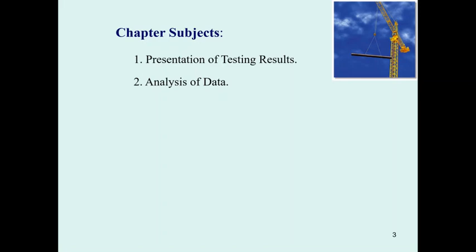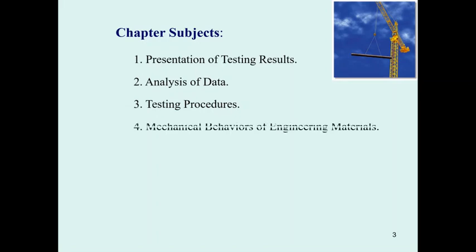The second chapter covers statistics: when you get data from the test, you will have many data points, so you need to find the mean and the standard deviation. The third chapter covers testing procedures — tension test, compression test, fracture test, and shear test — so you understand each procedure and can obtain the mechanical properties of the engineering materials. This chapter closely relates to the third chapter of mechanics of materials.